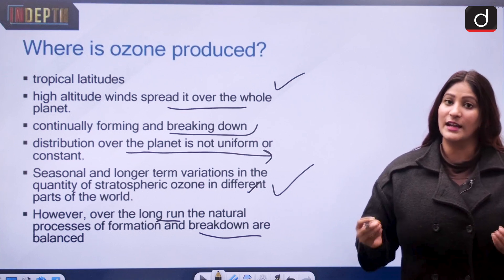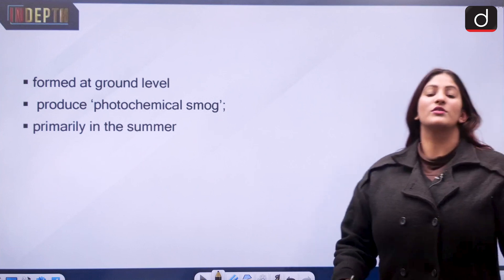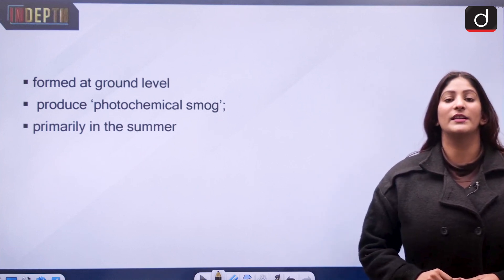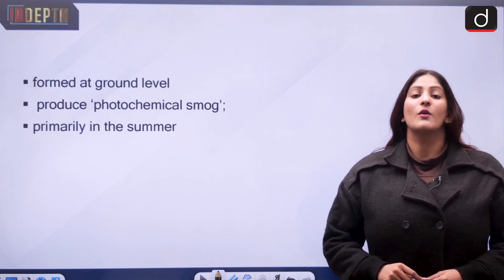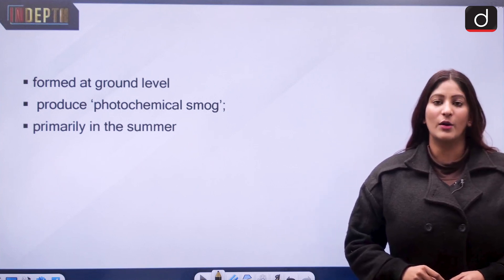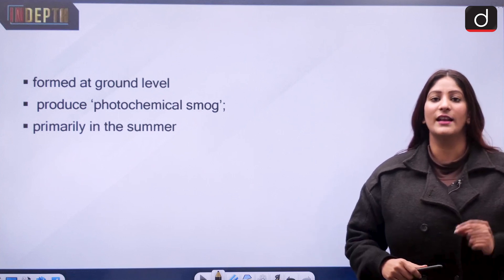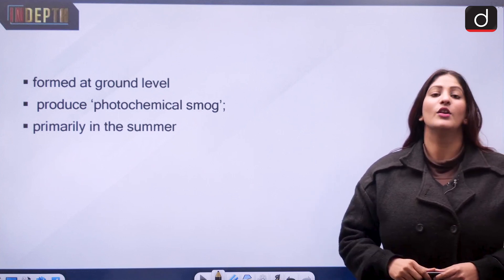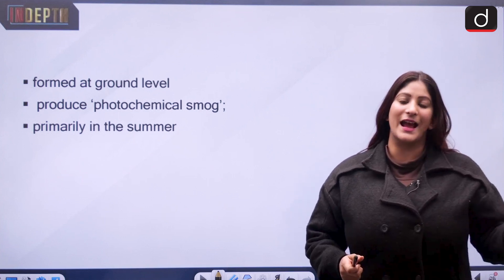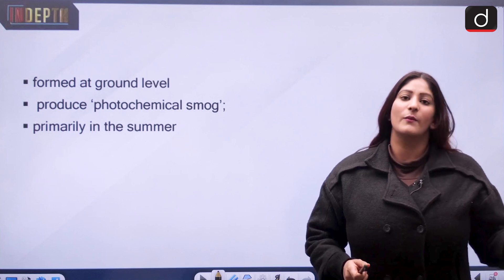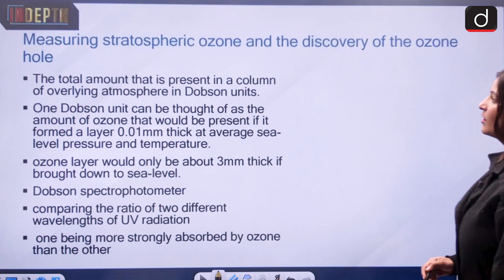Ozone is also formed at the ground level, but it is toxic in nature. This generally happens in summertime when sunlight interacts with nitrogen oxides from traffic to form ground-level ozone. Ozone gas is a toxic gas at the ground level — remember that.